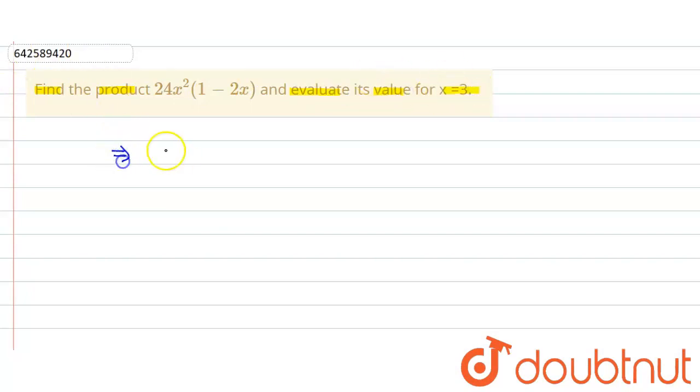So here it is 24x²(1-2x). First we multiply 24x² to 1 and then multiply 24x² to minus 2x.